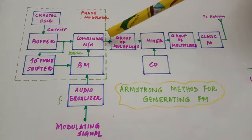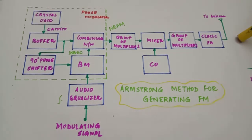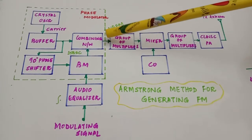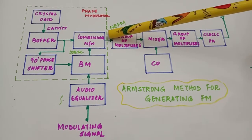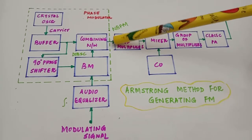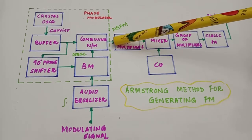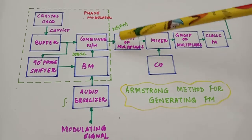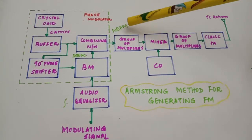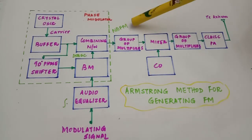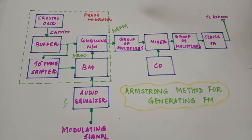The output at this stage is a narrow band FM because only two sidebands — one upper and one lower — are present, corresponding to a modulation index less than one. Narrow band FM has applications in mobile communication and marine communication, but for high-fidelity applications or broadcast transmissions it is essential to have wide band FM, which has more sidebands and larger frequency deviation.